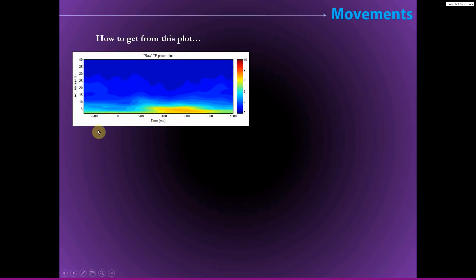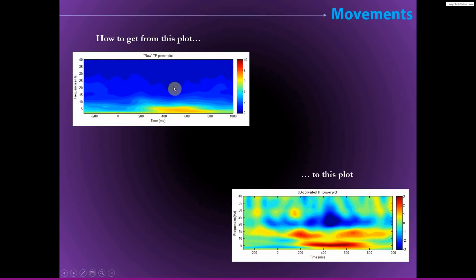Again, the goal is to get from a raw time-frequency power plot that looks like this to a plot that looks more like this, a baseline normalized plot, where we can see very clearly not only the increases relative to the baseline, but also the decreases relative to the baseline. These decreases, in particular, are very difficult to visualize in this raw time-frequency power plot. Also, here you can directly compare the effects across frequencies, whereas that's exceedingly difficult and basically not valid to do with raw power.